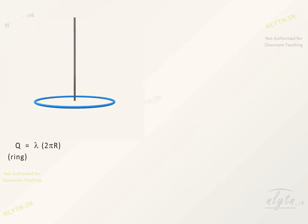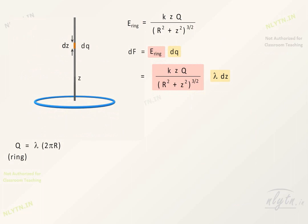For the given system, let us find the force exerted by ring on a small element of rod like this. Field due to ring at this point will be equal to this term. So the force on this small element will be equal to this term. Total force exerted by ring on rod will be equal to the integral of this term.